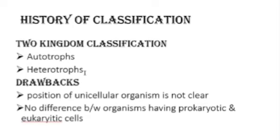Another drawback was that there was no difference made between organisms with prokaryotic cells and those with eukaryotic cells. Those were the two main drawbacks of the two kingdom classification system.